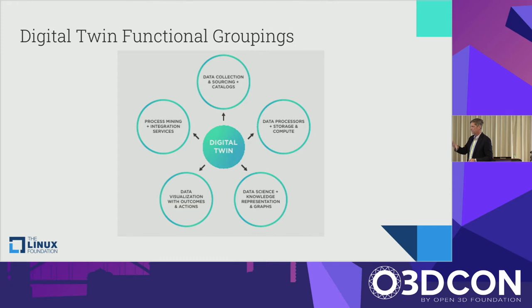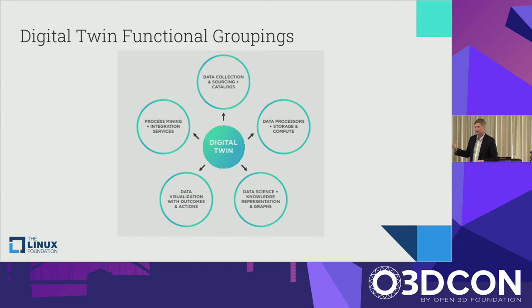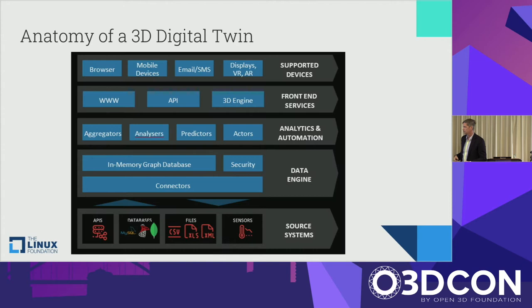There are basically five functional groupings around digital twins — a way to look at things architecturally and from a business process standpoint. With a digital twin at the center, the functional groups include: data processors, data science, visualization, process mining, and data collection. All the things from that evolutionary history now constitute the components of a digital twin. A digital twin may include one or more of these, or all five, depending on the application.